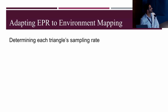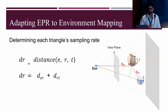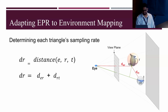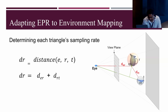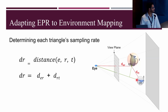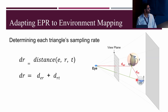For environment mapping, we adapt EPR by determining each triangle's largest footprint when reflected into eye view via any reflector. We conservatively find the distance light travels from the triangle to the reflector to the eye — the minimum of the sum of the distance from the eye to the circumsphere of the reflector to the circumsphere of the triangle. The sampling rate is inversely proportional to this distance.